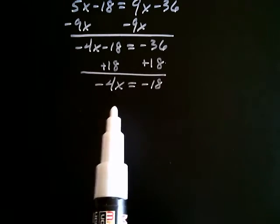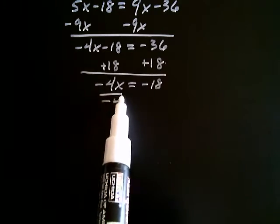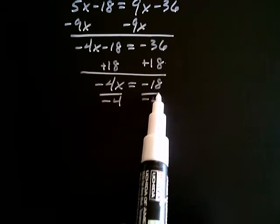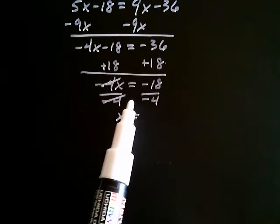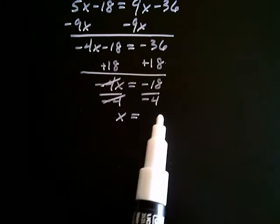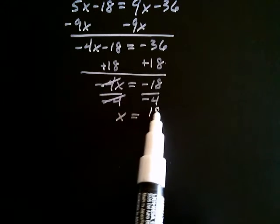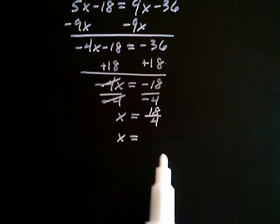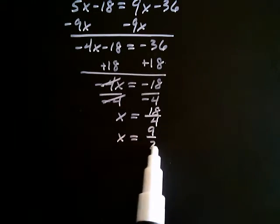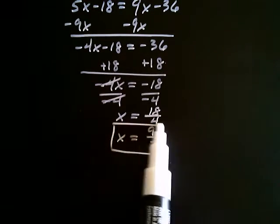Now we're going to divide both sides by negative 4. Negative 4's cancel, and I get x is equal to, well let's see, a negative over a negative is a positive. Positive 18 fourths, and now of course we can reduce that. That becomes 9 over 2, and that would be my answer. x equals 9 halves.